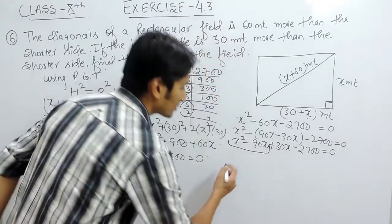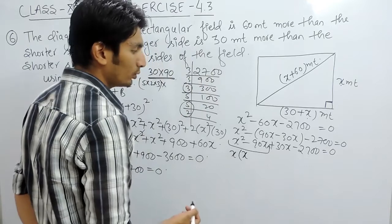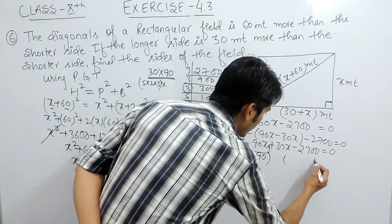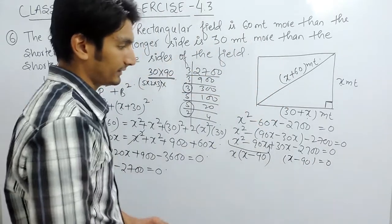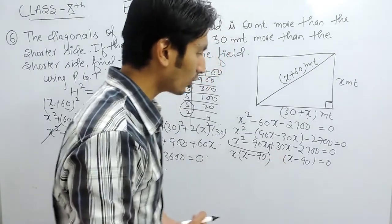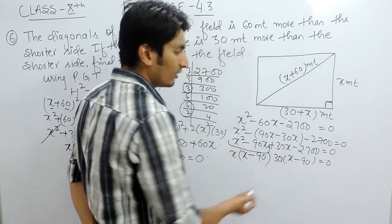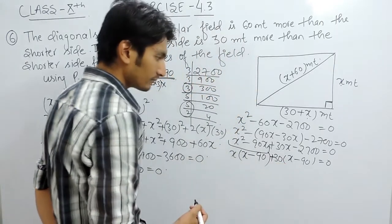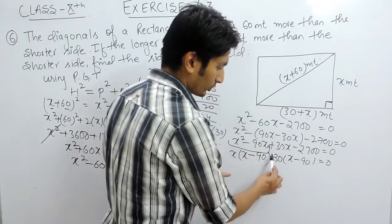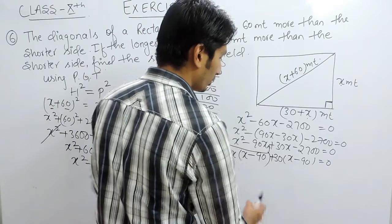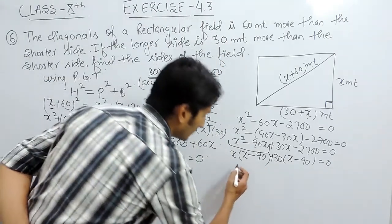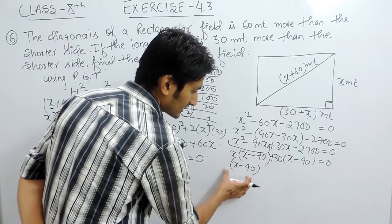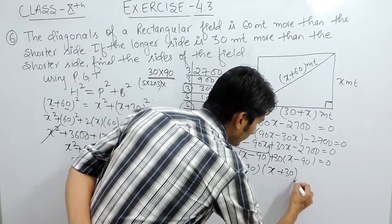From the first two terms, we take x as common: x times (x minus 90). From the last two terms, we take 30 as common: 30 times (x minus 90), which gives plus 2700 inside. Now x minus 90 is common in both terms, so taking it out: (x minus 90)(x plus 30) equals 0.